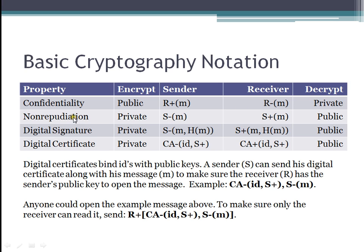In non-repudiation, which simply means that you can verify that the person who sent the message is who they say they are, we use the sender's IDs. The sender will send a message using his private key, and the receiver will open it using the sender's public key. The idea is the receiver knows that the sender must have sent the message, otherwise the message would not open with the sender's public key.